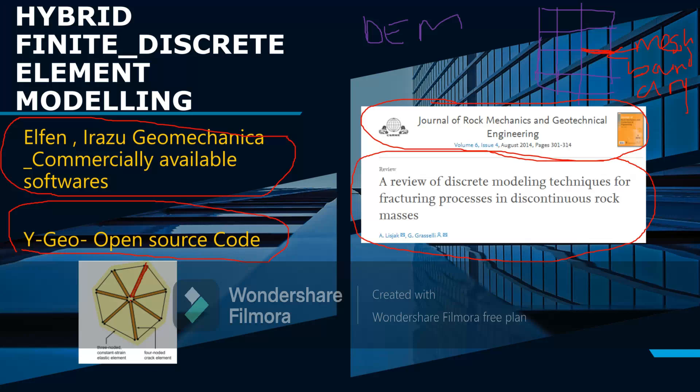But discrete element modeling's contact models allow for complete detachment, so you can see fracture, and this is important. Hybrid finite-discrete element modeling—the fracturing only occurs at the mesh boundary, and this is limiting, although it has its own usage.